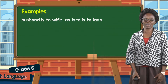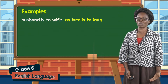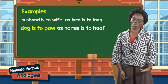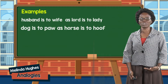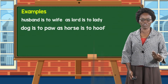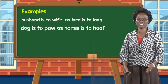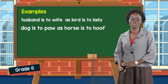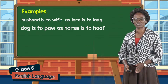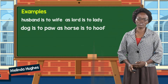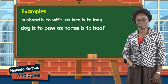So here we have some examples. Husband is to wife as lord is to lady. Dog is to paw as horse is to hoof. There we see the relationship between the first pair — husband and wife, lord and lady — being masculine and feminine. In the second pair, dog is to paw as horse is to hoof, we see the relationship between animals and their body parts.